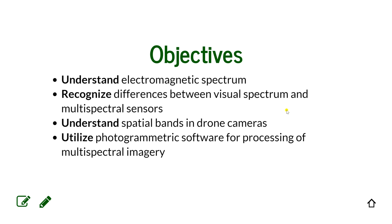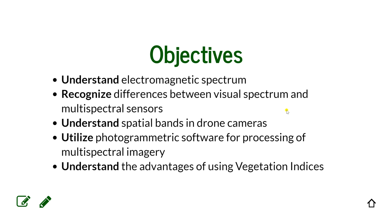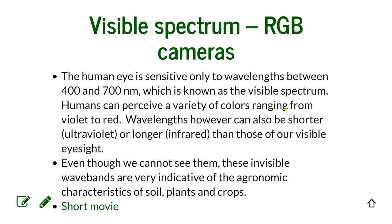We will learn how to utilize photogrammetry software for processing of multispectral imagery — specifically Agisoft Metashape in the assignment today. Instead of processing RGB data, we're going to be introducing multispectral layers. And then we're going to focus on vegetation indices, and I'm going to talk about each one that we'll calculate during the assignment.